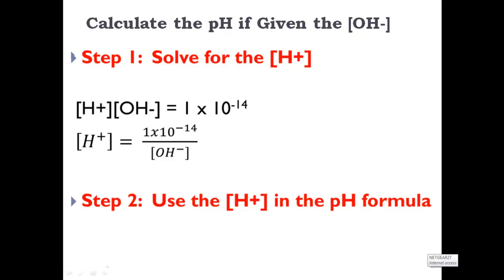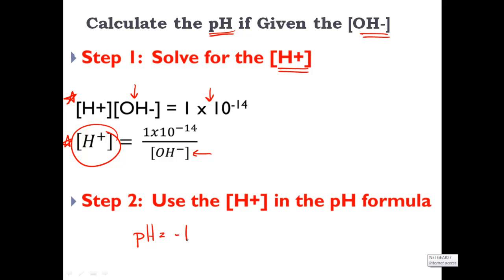The steps necessary are two. In order to calculate the pH given my hydroxide or base concentration, I need two steps. Step 1 is going to involve solving for the H⁺ ion concentration using that formula. If I rearrange the equation, the H⁺ ion concentration equals 1×10⁻¹⁴ divided by the hydroxide concentration — that will be given in the problem. Step 2 is to plug this value into my pH formula: pH equals the negative log of the H⁺ ion concentration.